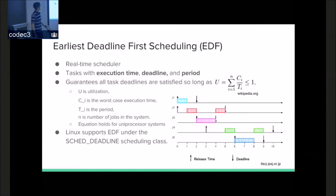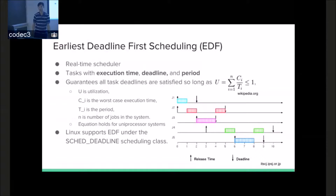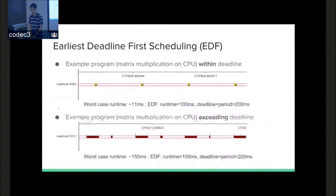EDF guarantees tasks will always meet their deadlines so long as the sum of their utilization metrics is less than one — or, if you have m CPUs, less than the number of CPUs. If you go over that value, you'll cause overruns and not all tasks can meet the deadline. Linux supports EDF, but it so happens that the NVIDIA Jetson TK1 doesn't necessarily support it directly, so a lot of work went into getting the TK1 to even support EDF in the first place.